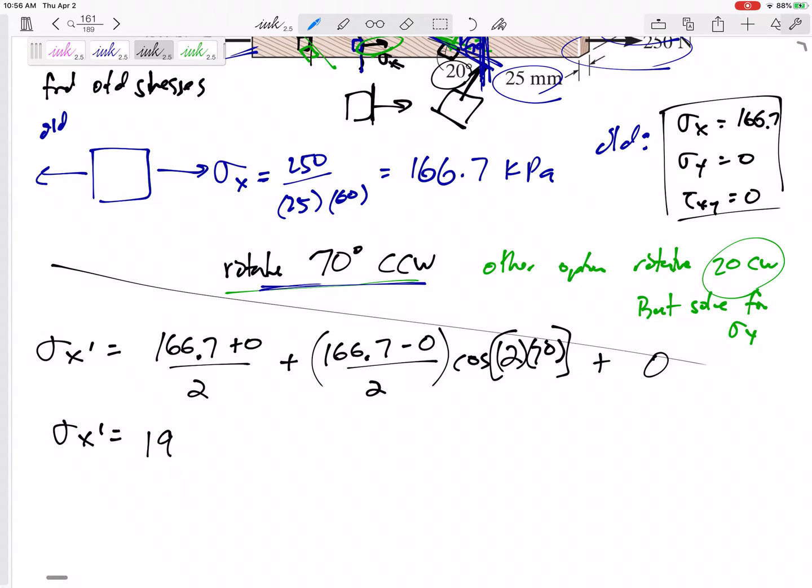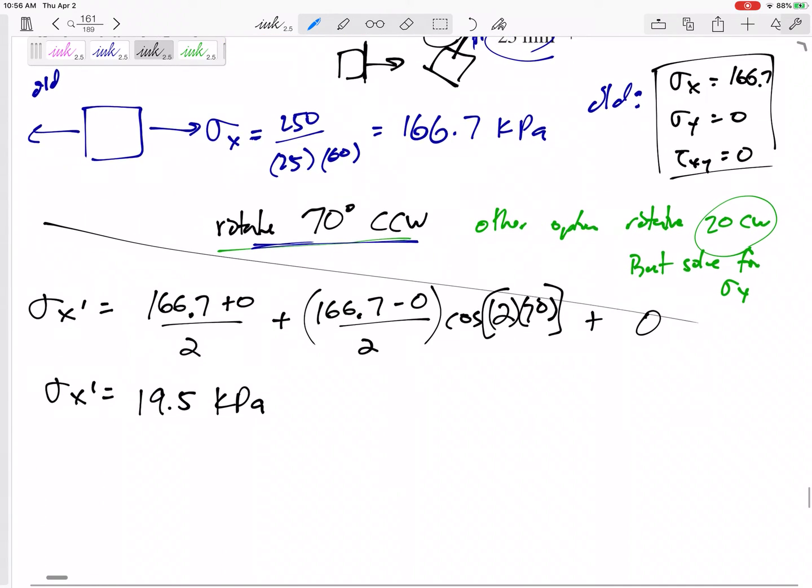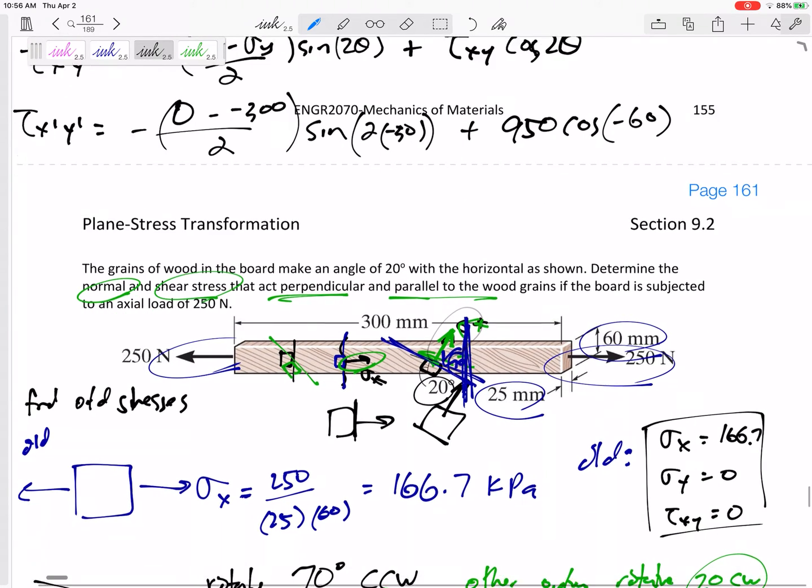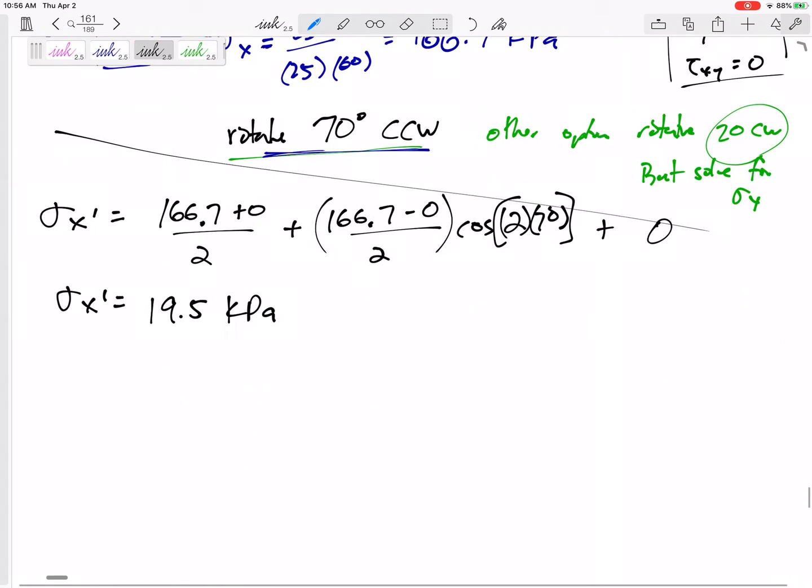Tau XY is 0, so I could say sine of 140, but I multiply it times 0. So my new sigma X, my new stress coming out of that face, would be 19.5 kPa. 19.5 kPa. So that new stress is 19.5 kPa. Positive, so it's still coming out.